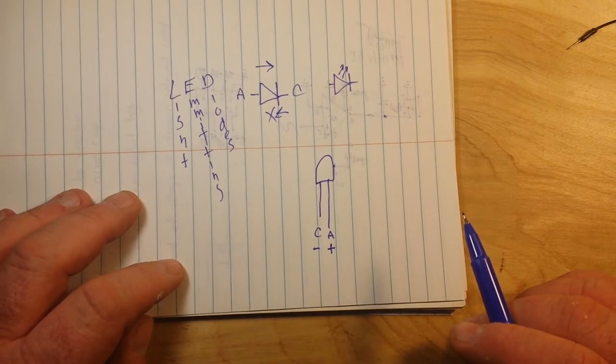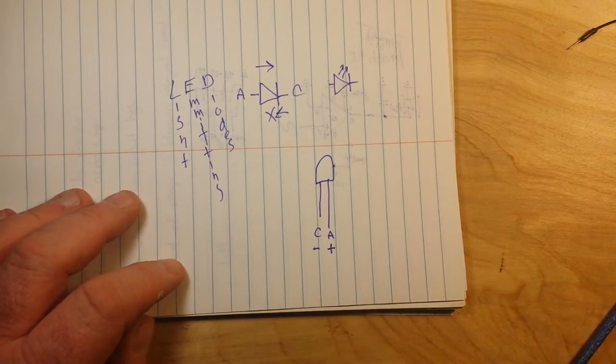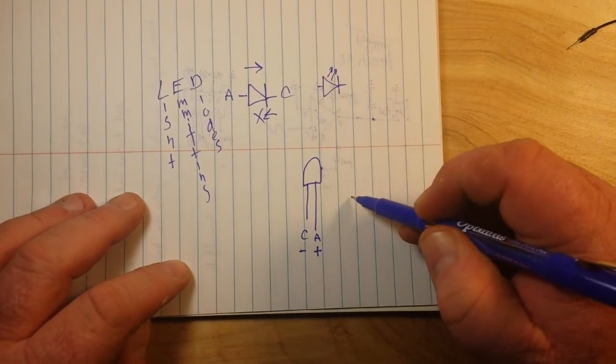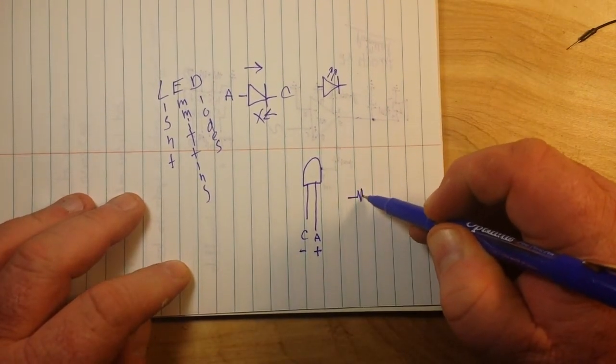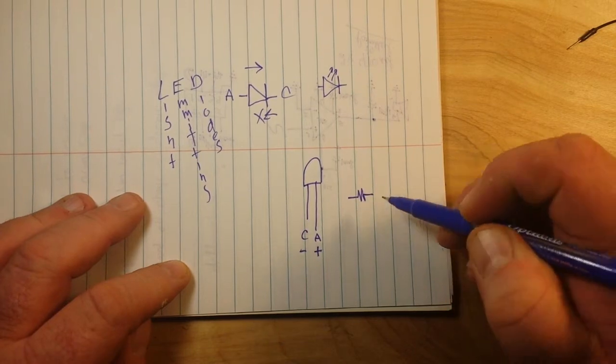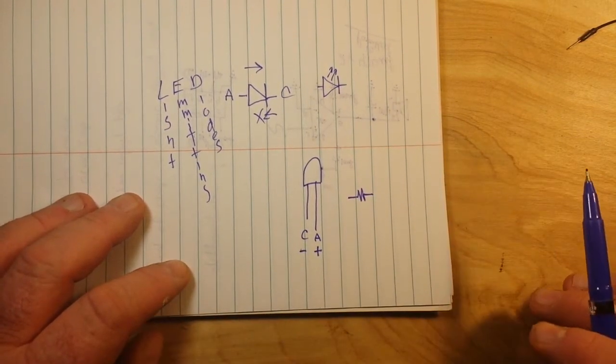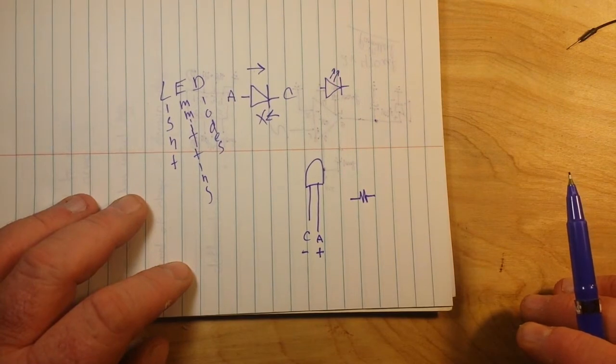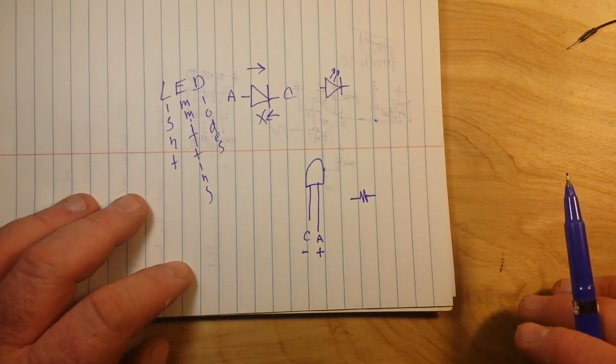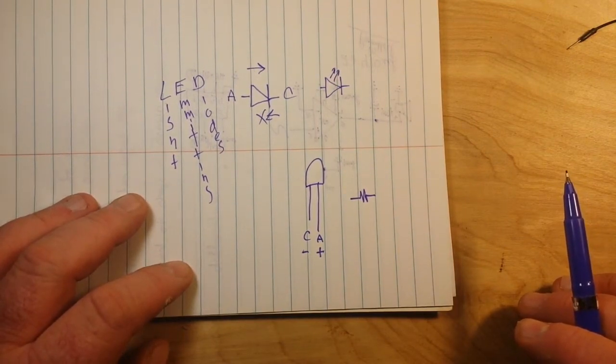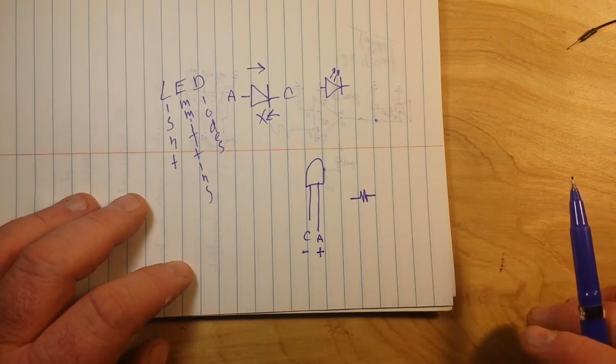The other thing is we need to current limit our LEDs, so we need to use a resistor. This is the symbol for a resistor. I'm not much of an artist. Now there's a whole formula in calculating what value of resistor you need for your LEDs and I'm not going to go into that today. I have a video on it if you're interested.